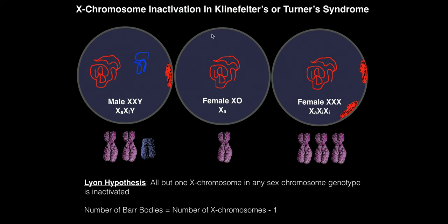Turner syndrome has the genotype XO — the O means there's no second chromosome; sometimes written simply as X. This person has only one X chromosome and is phenotypically female. That single X chromosome is active by default, and since there's no second X to inactivate, they have zero bar bodies: one X chromosome minus one equals zero.